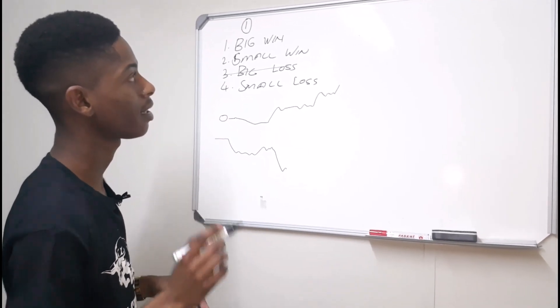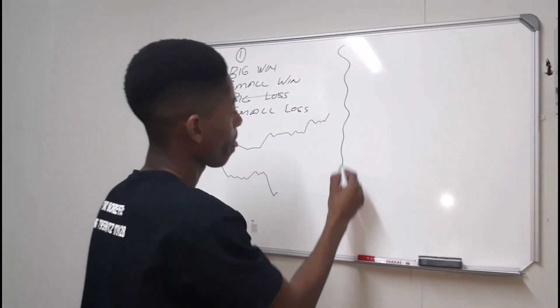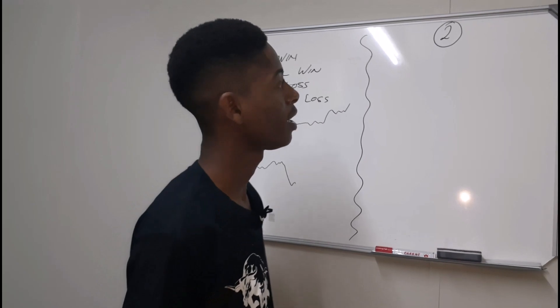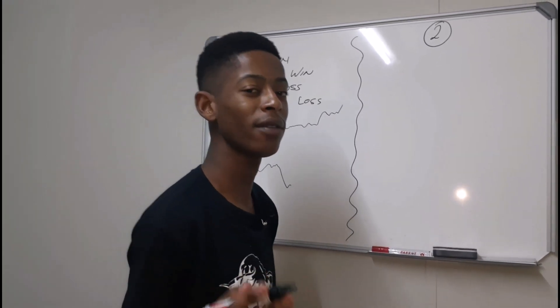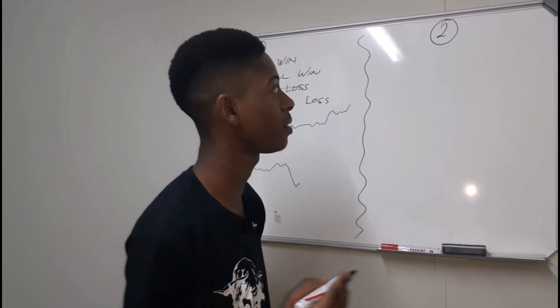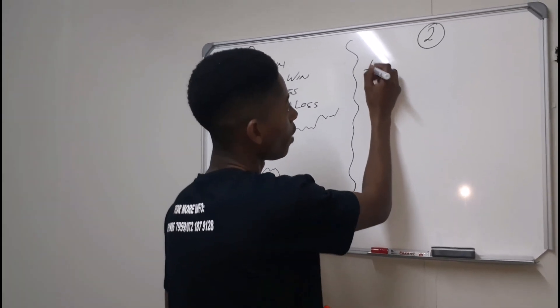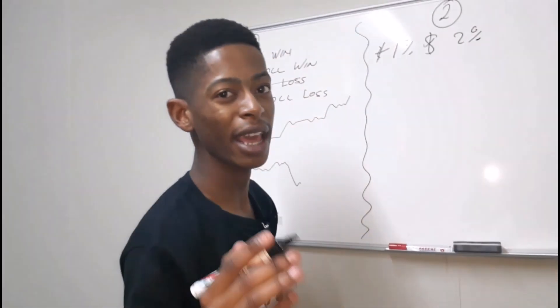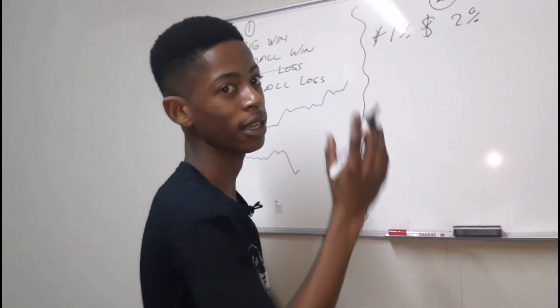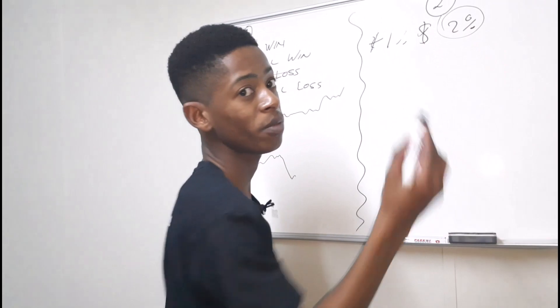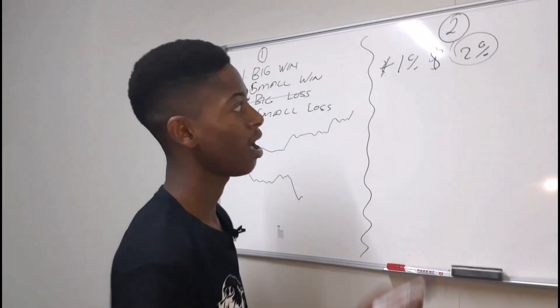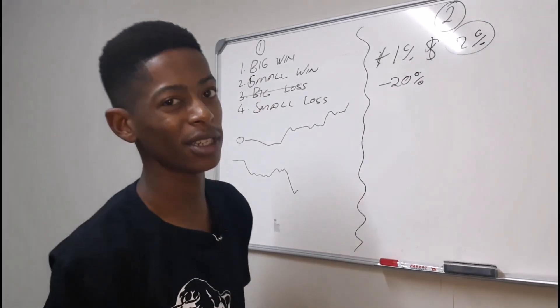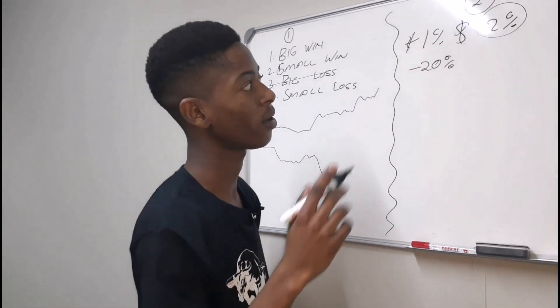Now I want us to dive onto the second secret. You have to stick to a specific risk, meaning that whatever you're trading, whether it's a big or small account, you have to stick to a specific risk. Meaning that whether you're risking 1% or 2%, it means that whenever you experience a loss, it has to be that risk.